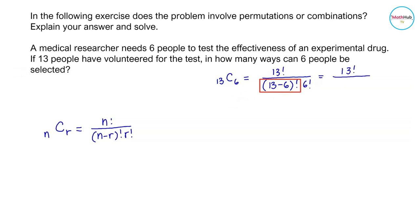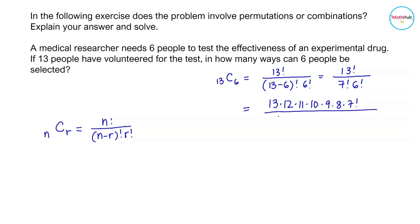Simplifying, 13 minus 6 equals 7, so we have 13! / (7! × 6!). We rewrite the numerator as 13 × 12 × 11 × 10 × 9 × 8 × 7!, and in the denominator copy 7! and write 6! as 6 × 5 × 4 × 3 × 2 × 1. Cancel 7!, then multiply the numerator and divide by the denominator to get 1716.